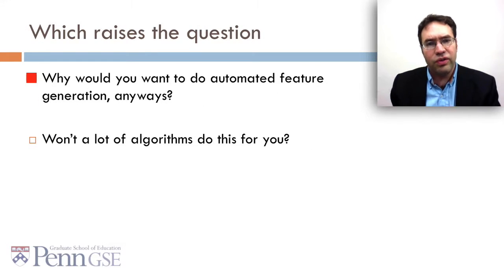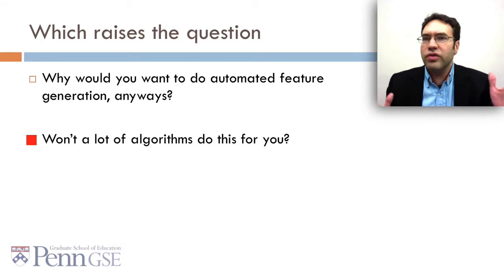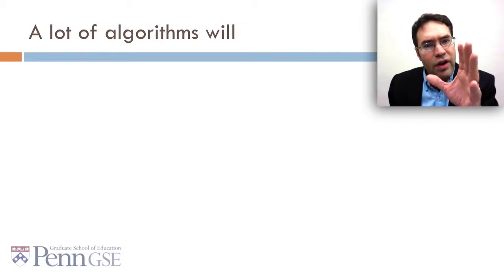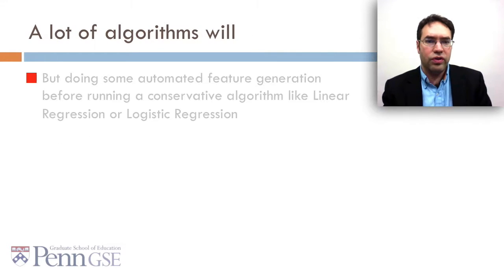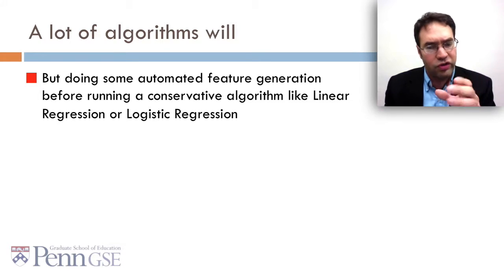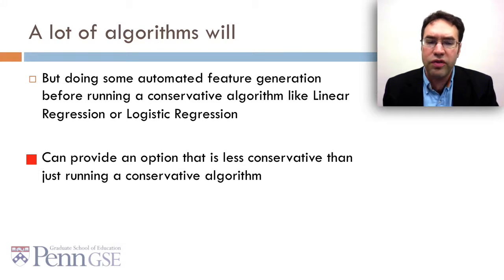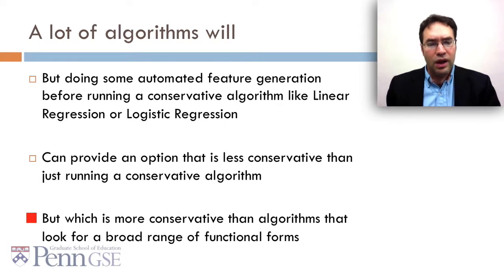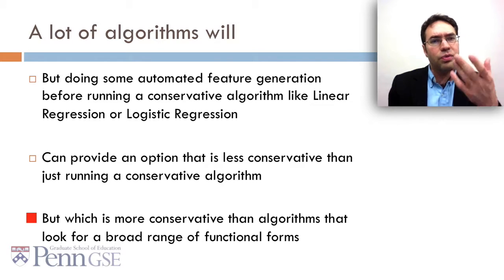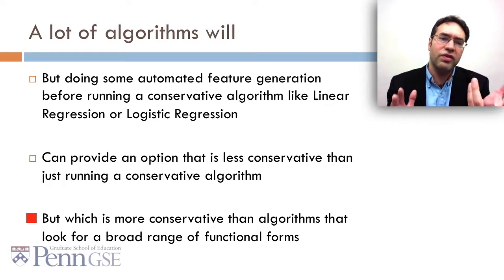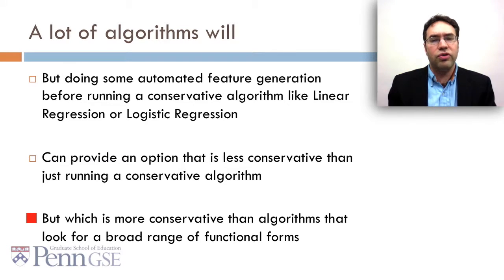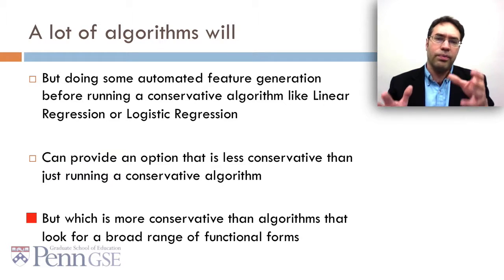Now this raises the question, why would you want to do automated feature generation anyways when you've got a lot of algorithms like J48 that'll do some aspect for you? Well, a lot of algorithms will do some automated feature generation of sorts, but doing some automated feature generation before running a conservative algorithm like linear regression or logistic regression can provide an option that's less conservative than just running a conservative algorithm, but at the same time which is more conservative than algorithms that look for a broad range of functional forms. The trick is that specific algorithms like J48 will do specific types of transformation or automated feature generation, but they won't do all of them and you don't get to pick. If you do it yourself, you get to pick what you're doing, and then you can use a conservative algorithm if you want.